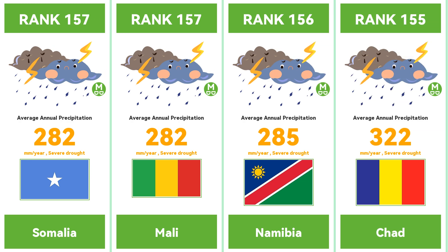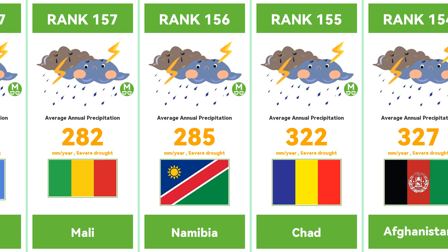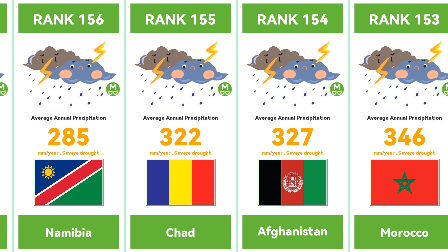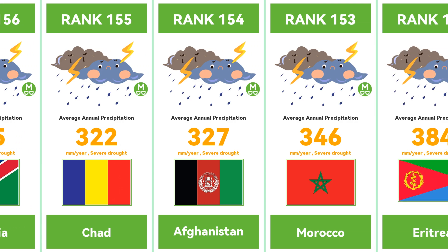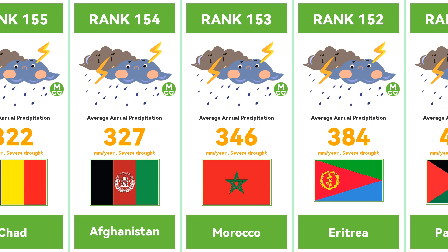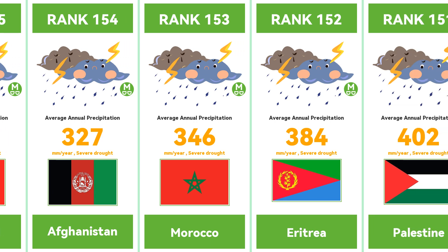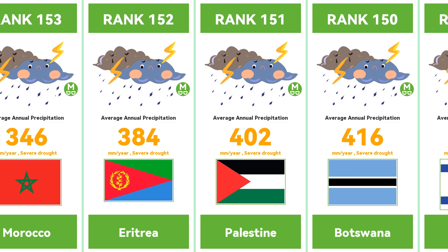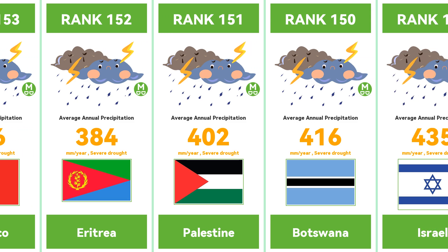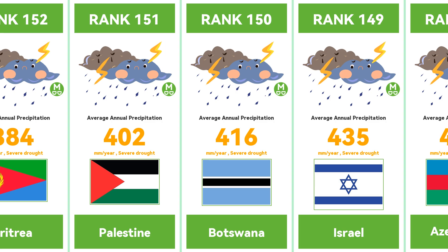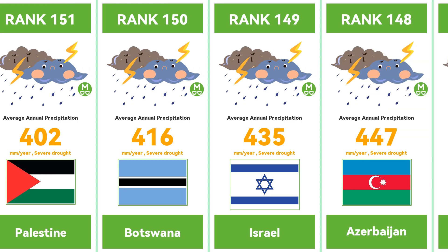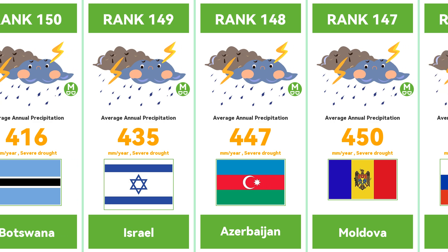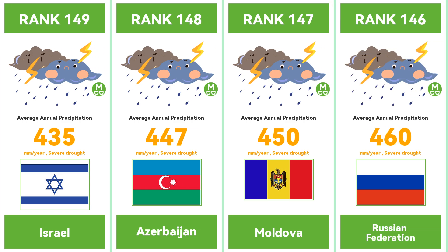However, some countries are facing the challenge of drought. The average annual precipitation in desert and semi-arid areas is often below 250 millimeters, and these areas are often located around the Sahara Desert in Africa, inland Australia, and desert areas in West Asia and North America. This drought condition has had a serious impact on agricultural production and water resources.